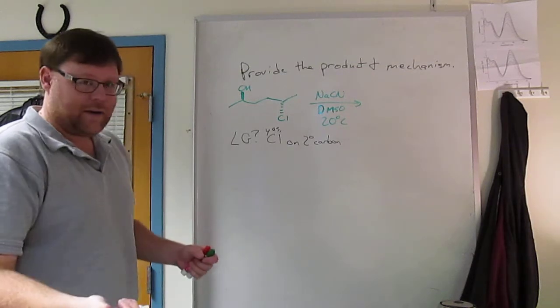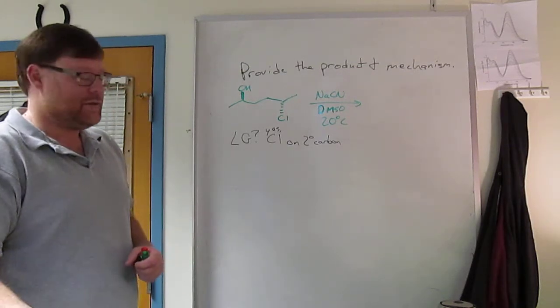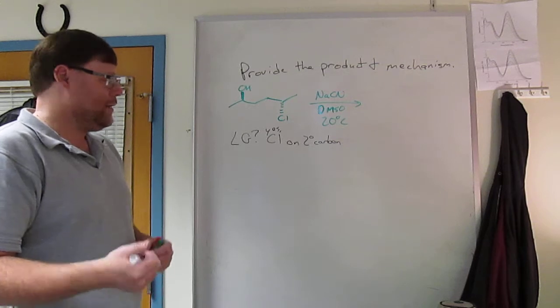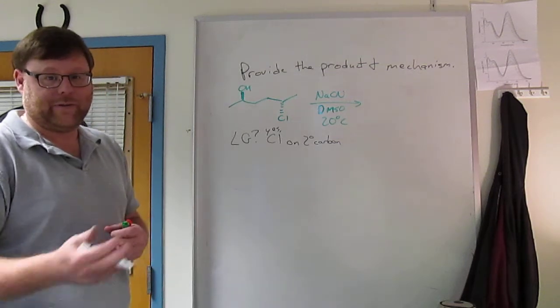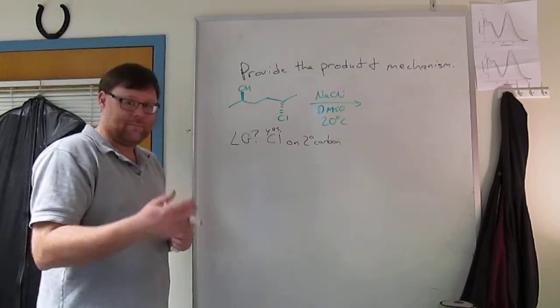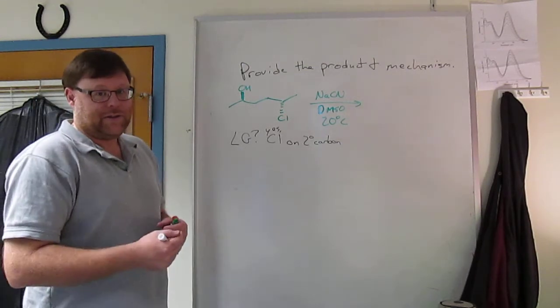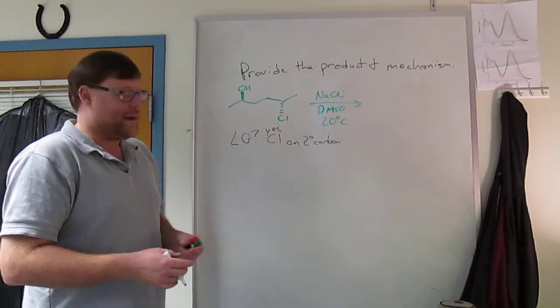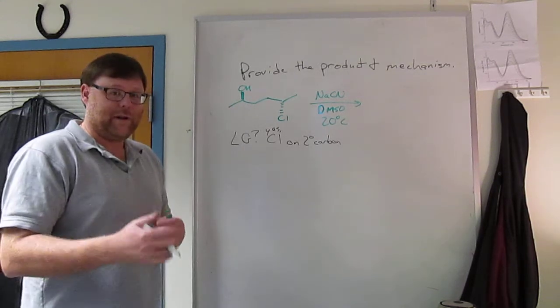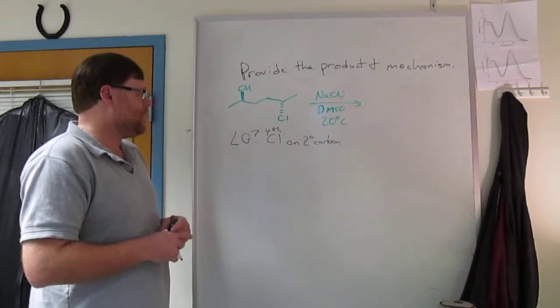Leaving group on a secondary carbon doesn't really narrow things down a whole lot for you. Secondary, leaving groups on secondary carbons can undergo SN1 or SN2. They don't undergo SN1 all that fast because secondary cation is not terribly stable, but it exists. Likewise, they don't undergo SN2 all that fast because there's a little bit of steric hindrance there. Not enough to prevent the reaction, but enough to slow it down. So SN1 or SN2 is both available.